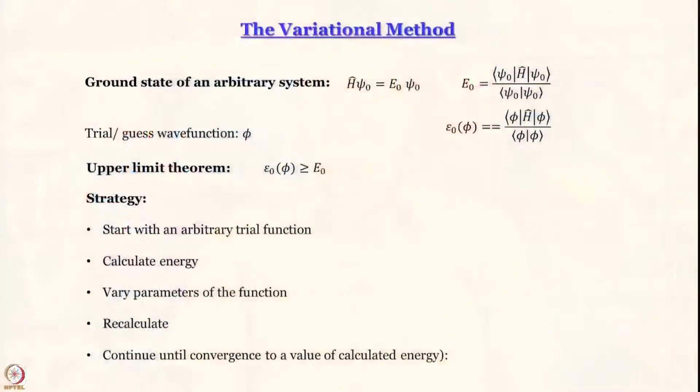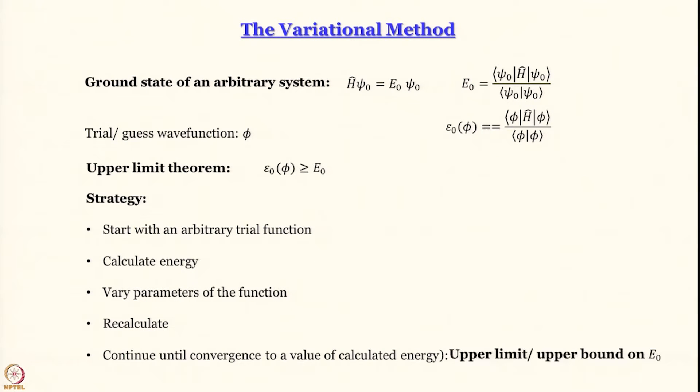The strategy is: you calculate energy, vary parameters of the function, and recalculate. What we have done is minimize epsilon_0 with respect to the variational parameter and obtained the upper limit or upper bound on the ground state energy E_0.